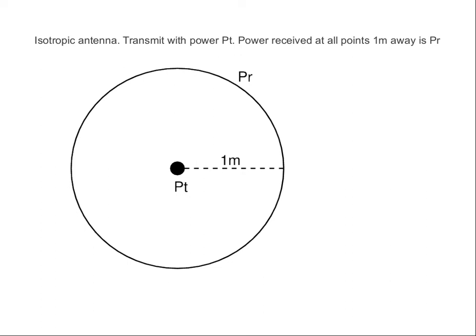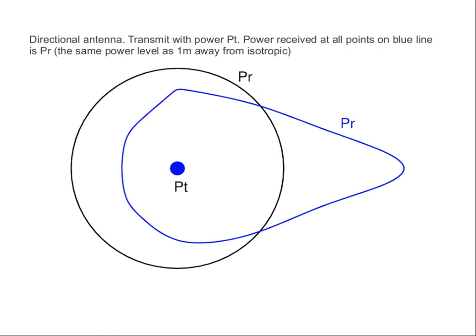Isotropic is equal in all directions. Now let's say I have a real antenna which is not isotropic — it focuses the energy in one particular direction. I put it in the same position as my isotropic antenna.